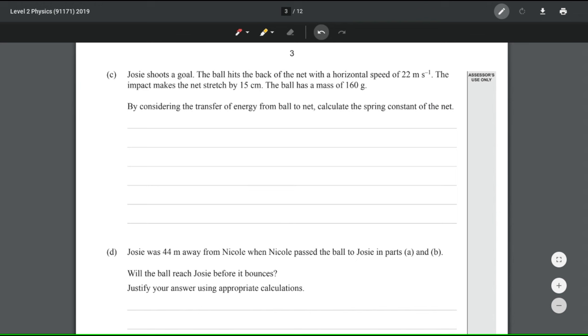Josie shoots a goal, the ball hits the back of the net with a horizontal speed of 22, the impact makes the net stretch by 15 centimeters, and the ball has a mass of 160 grams. By considering transfer of energy from the ball to the net, calculate the spring constant of the net. Well, first of all, let's write what we have.